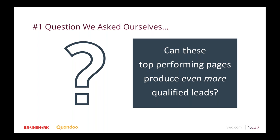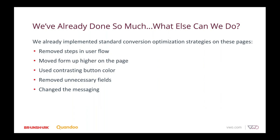The number one question we've been asking ourselves is: these are really top-performing pages — they do so much for us — but is there anything we can do to get them to produce even more qualified leads? The tough part is that we've already done a lot. In Q4 2017, we did an overhaul of both pages. We removed steps in our user flow because users were falling off at certain parts. We moved forms up higher on the page, implemented a contrasting button color to draw attention to the Marketo form submit button, removed unnecessary fields from the forms, and changed the messaging on the pages. With so much done, we were stumped trying to figure out what else we could do.